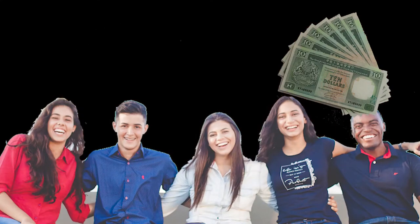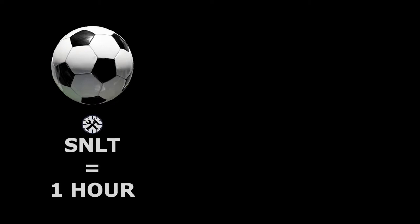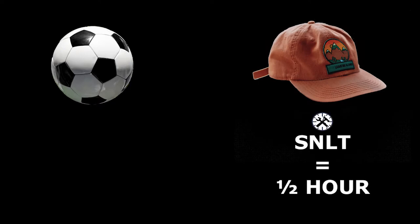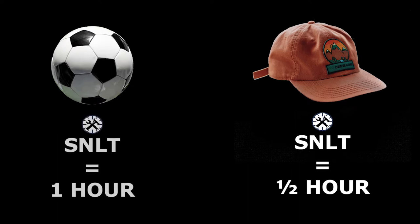Let us again return to our abstract thought of space — complete blackness with no items, no money, no people — just the commodities we'll use for our example. This time we now know the value of our commodity. Let's take our football again; the socially necessary labor time is one hour, so we call the value embodied within it one. Now let's also take our hat, but we'll say the socially necessary labor time is only half an hour — half the amount of time to produce as the football.